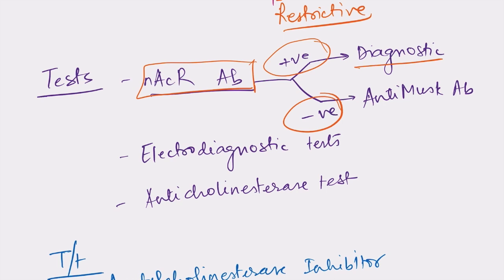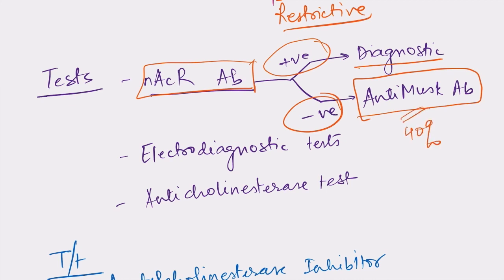If nAChR antibodies are negative, we must do other tests. One of them is detection of anti-MuSK antibodies. It has been found that anti-MuSK antibodies are present in approximately 40% of patients who are even negative for nAChR antibodies.